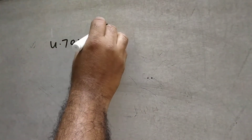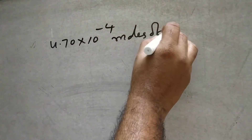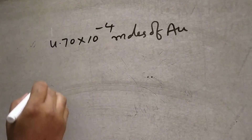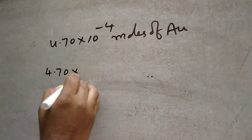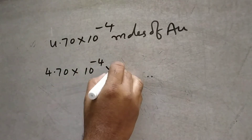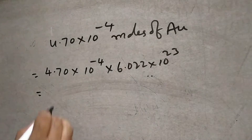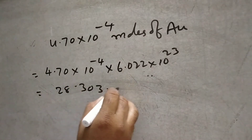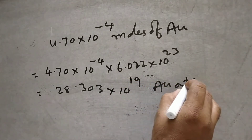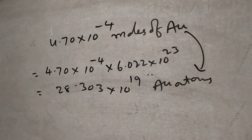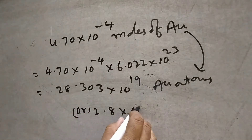Next problem: 4.70 into 10 to the power of minus 4 moles of Au, that is gold. How many Au atoms are present? That is 4.70 into 10 to the power of minus 4 into 6.022 into 10 to the power of 23, which gives 28.303 into 10 to the power of 19 Au atoms, or 2.8 into 10 to the power of 20 Au atoms.